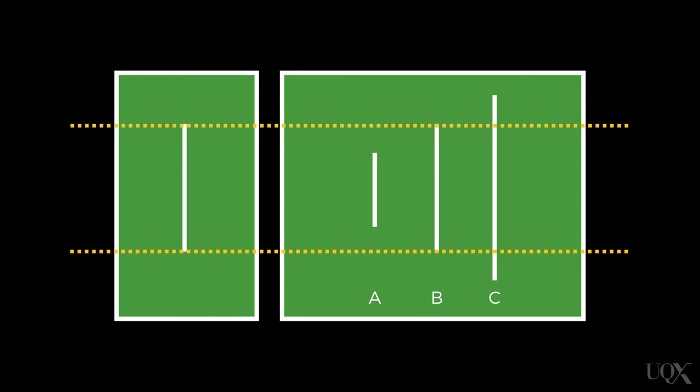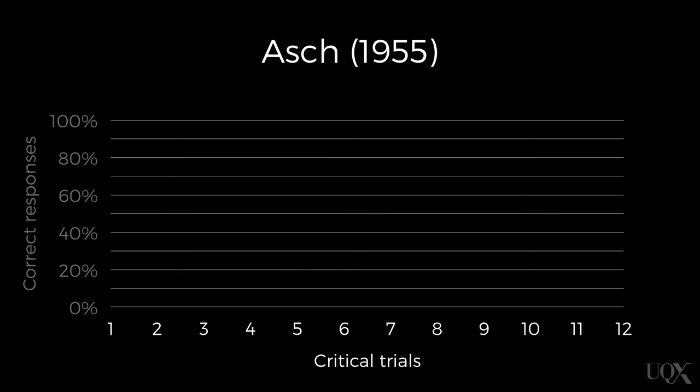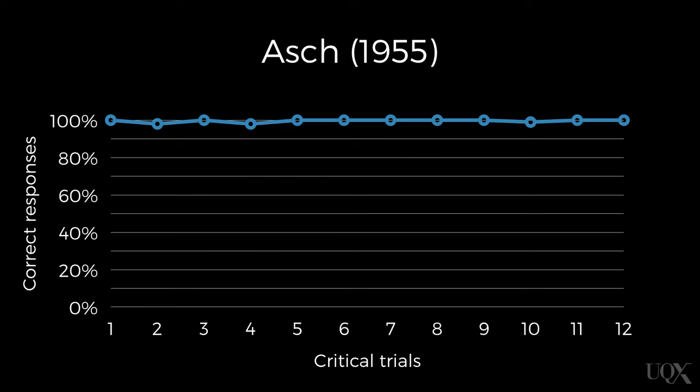In fact, when tested individually, people made mistakes on this task less than 1% of the time. On this figure, the y-axis indicates the percentage of correct responses, and the x-axis shows the 12 critical trials. We can see that participants' accuracy is nearly 100% when tested individually, because they're pretty much always giving the correct response.